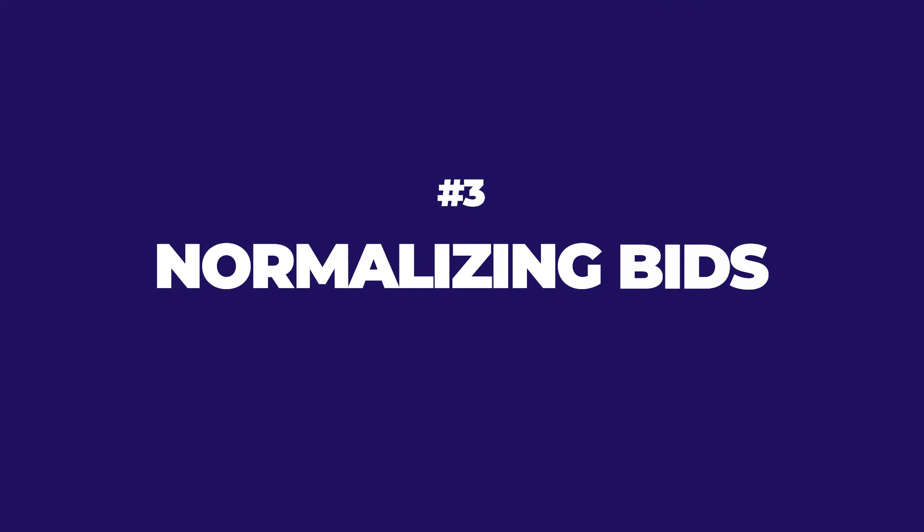Number three: normalizing bids. This is where having the right format is absolutely key. Hopefully you've provided a template so you don't waste time translating and interpreting everything. Normalizing bids means you're able to compare them and the information is consistent. This involves adjusting bids to account for variations in scope, specifications, or pricing assumptions, allowing you to compare apples to apples instead of apples to oranges.